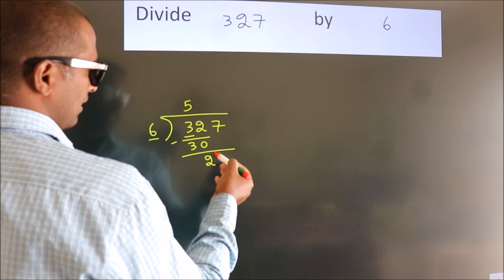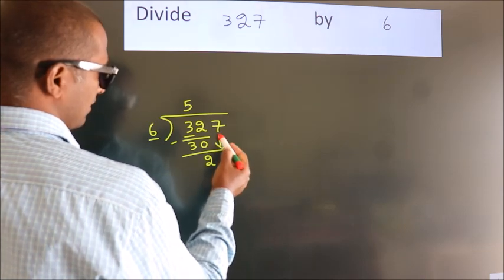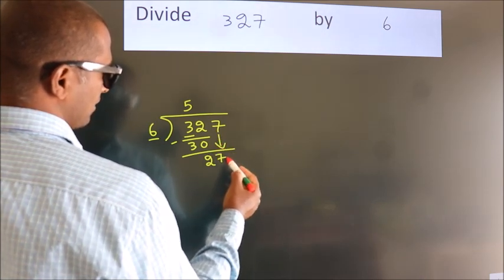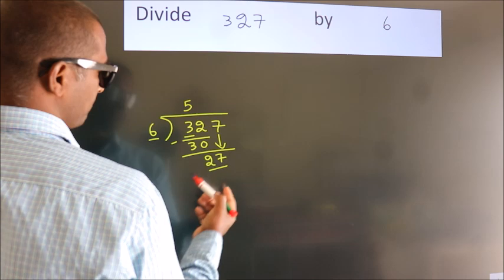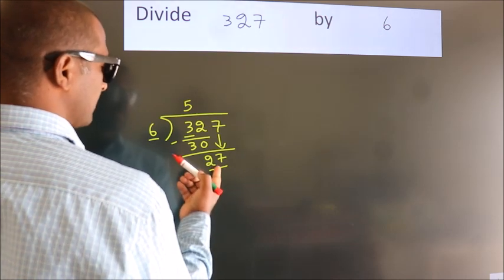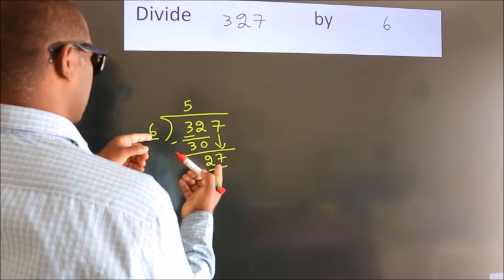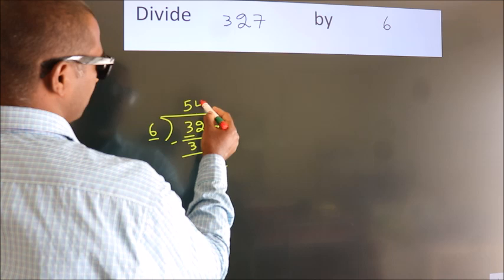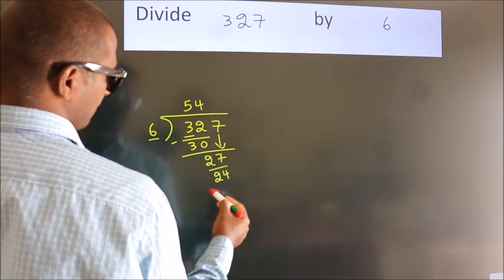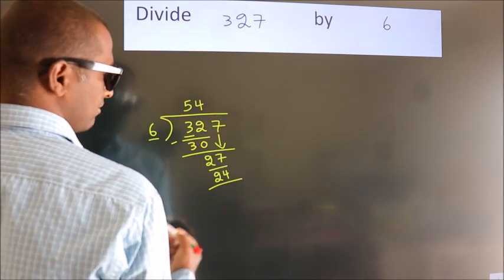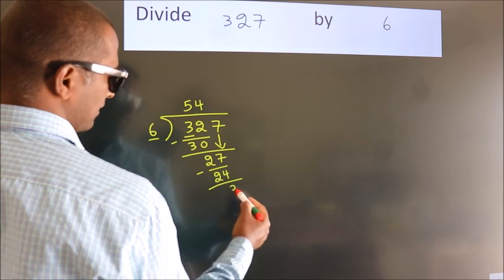After this, bring down the beside number. So 7 down. So 27. A number close to 27 in the 6 table is 6 fours, 24. Now we subtract. We get 3.